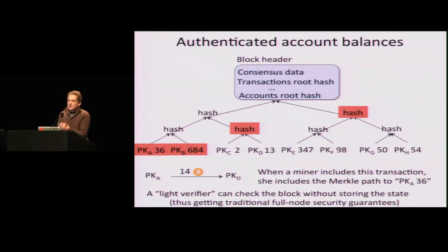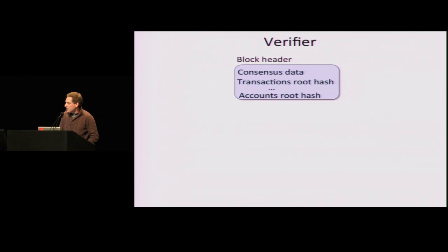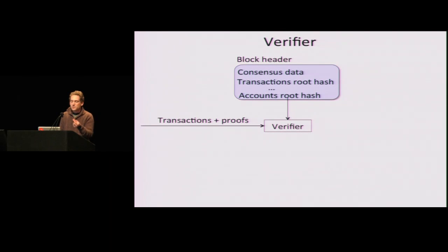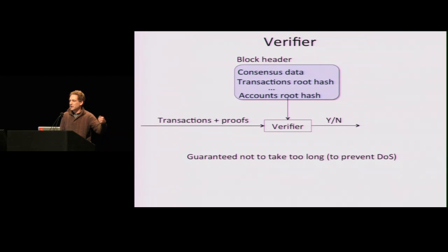You get a light verifier with full verifier security guarantees. Each transaction will include the Merkle path that proves that Alice has the correct amount. The verifier gets the block header, takes the root hash, takes the transactions and the proofs for each one, does the Merkle verification and outputs yes or no. This is important because we're trying to prevent denial-of-service attacks — Merkle paths are short, they're logarithmic in the size of the key-value store, so the verifier can do this quickly.